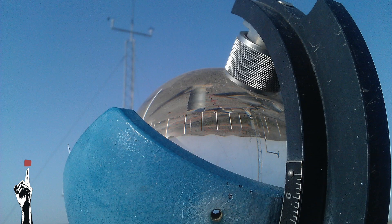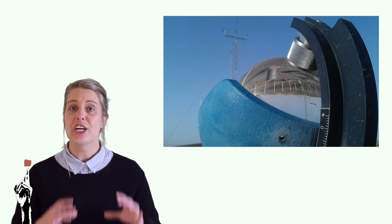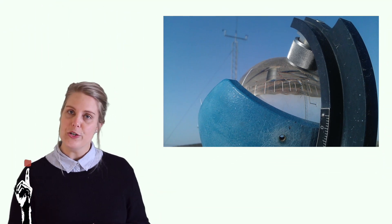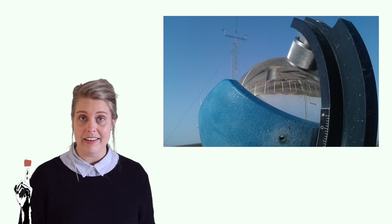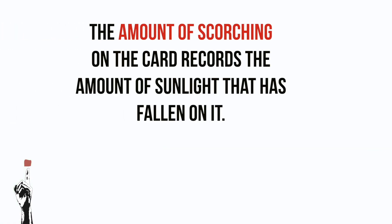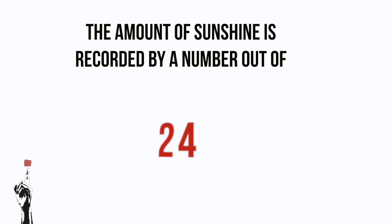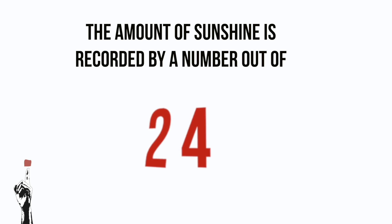Cumulonimbus clouds are the very big clouds that you would find when a storm is approaching, and they often bring with them lightning and thunder. Sunshine is recorded with a simple yet clever device called the Campbell-Stokes recorder. In this device a glass sphere concentrates sunlight onto a card, and the amount of scorching on the card records the amount of sunlight that has fallen on it. The amount of sunlight is recorded as a number out of 24.